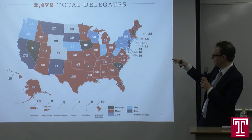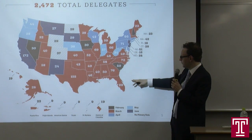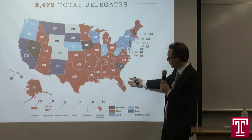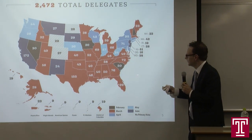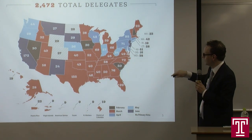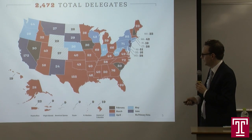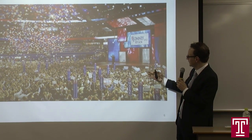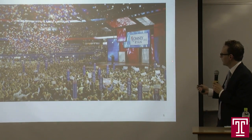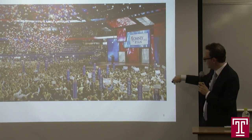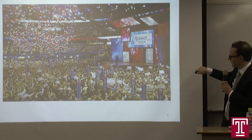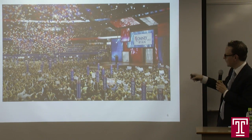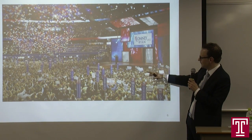Here is the Republican delegate map showing how delegates are distributed across states. The most populous states get the most delegates — Florida has 99, Texas 155, California 172 — dividing up their 2,472 delegates. Eventually the delegates are actual human beings. This is a picture of the 2012 convention with Mitt Romney and Paul Ryan, and all the delegates on the floor filling the arena. It's at the convention that they officially nominate the candidate for president.